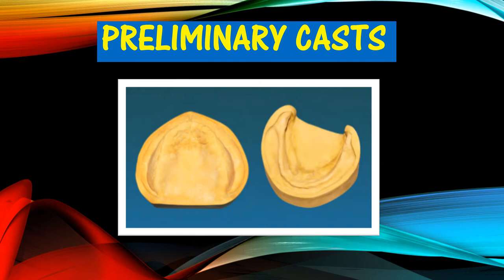Diagnostic casts are very helpful to further evaluate the anatomy and condition of the residual ridges. Generally, these casts are made from preliminary impressions made with irreversible hydrocolloid or alginate in stock trays. Good diagnostic casts should include retromolar pad and border tissues, as well as pterygomaxillary notch and the posterior palatal seal area.